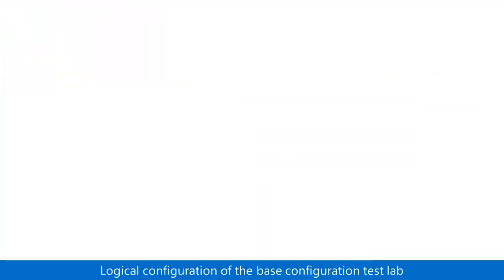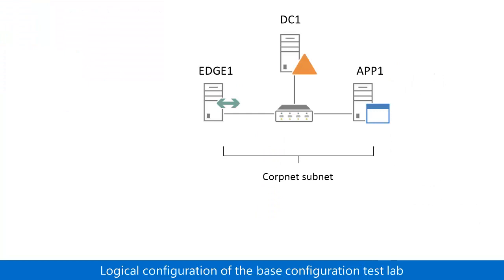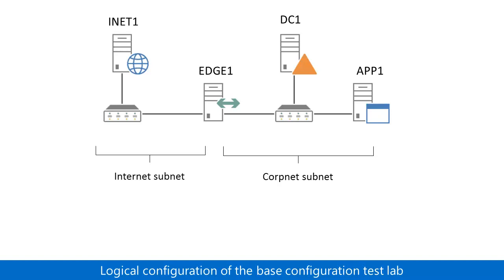The logical configuration of the Base Configuration Test Lab consists of three servers — DC1, App1, and Edge1 — that are connected to the CorpNet subnet. Two servers, Edge1 and iNet1, are connected to the Internet subnet. A client computer, Client1, can connect to either subnet.